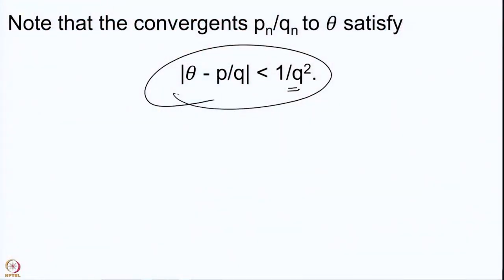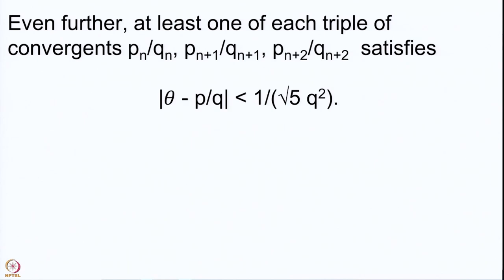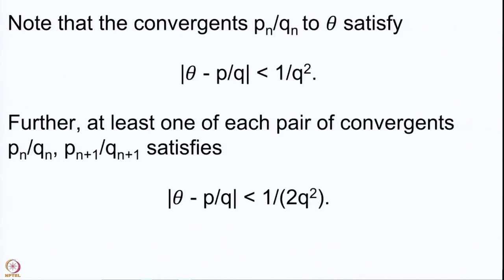We could improve this further to see that at least one from each pair of consecutive convergents will satisfy that |θ - P/Q| < 1/(2Q²). So the constant which was 1 here has now become 2.